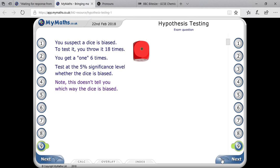Note that this doesn't tell you which way the dice is biased. So basically, it is a two-tailed test, because either the value can increase or decrease.